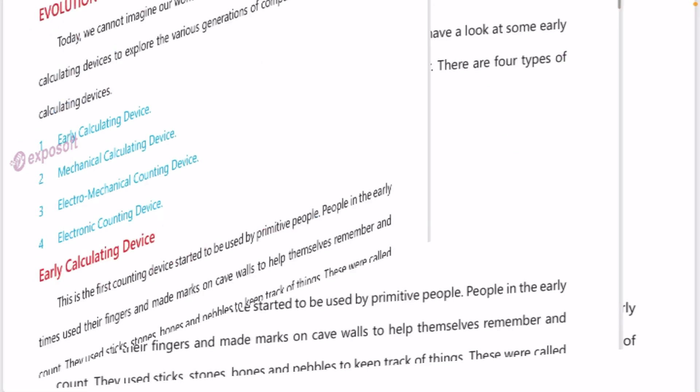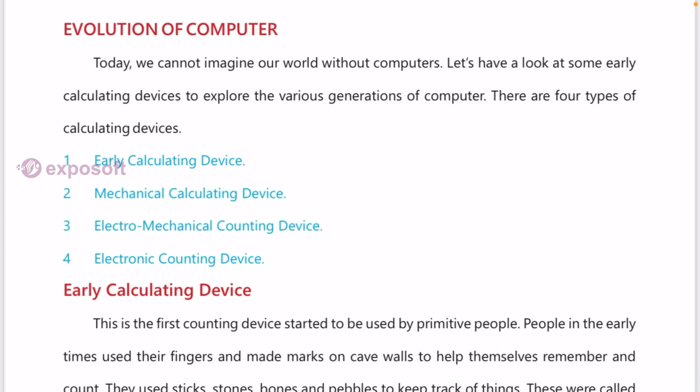Evolution of computers. There are four types of calculating devices: early calculating device, mechanical calculating device, electromechanical counting device, and electronic counting device.